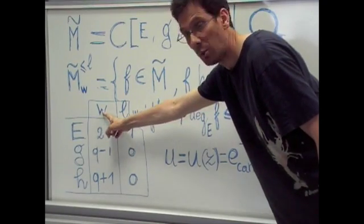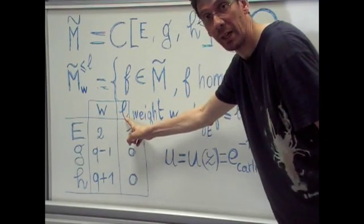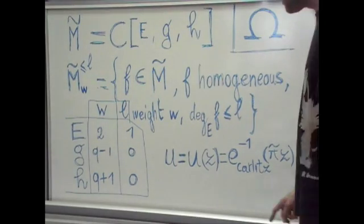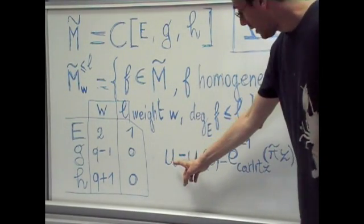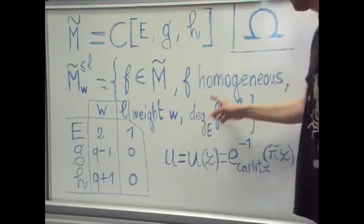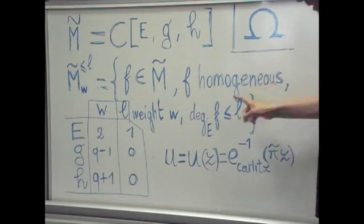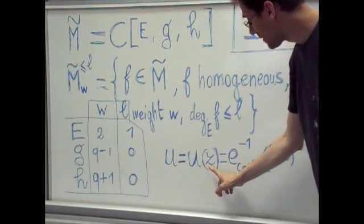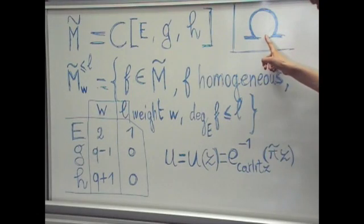The weight is denoted by W and the depth is denoted by L. In this theory, there is a parameter at infinity of the space omega. This parameter depends on Z in this space by the following formula.